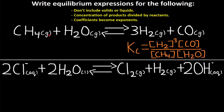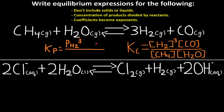Since this is all gases, we can also write this as Kp. Kp is written almost identical to Kc, but instead of concentration with square brackets, it will be P. So we have PH2 to the power of 3, PCO, divided by PCH4 and PH2O.